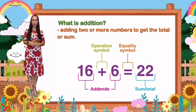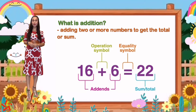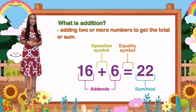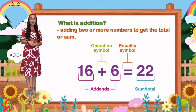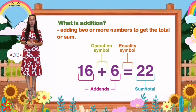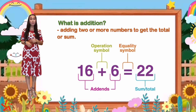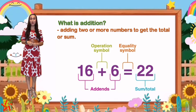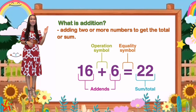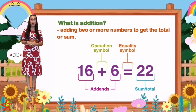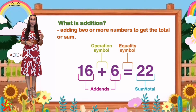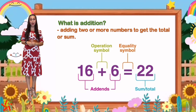In order for you to understand it well, can you check these numbers? How many numbers are there? There are 3 numbers: 16, 6, and 22. If you look at 16 and 6, we call these numbers addends. The mathematical symbol or operation symbol is plus. You can also see the equality symbol, which is equal. And the sum or the total is 22. So 16 plus 6 equals 22. 16 and 6 are the addends, and 22 is the sum or the total.